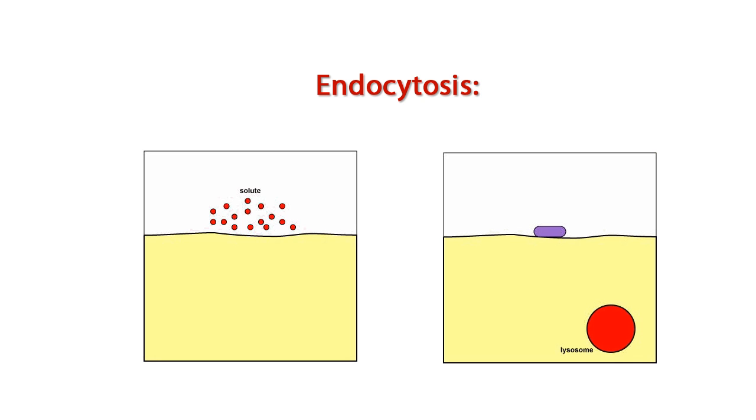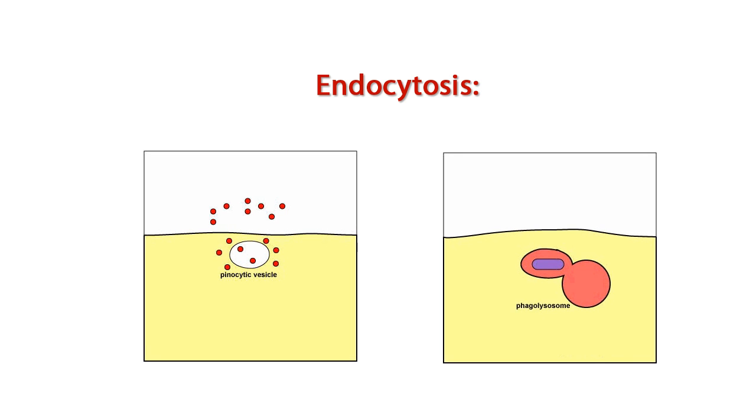In the case of endocytosis, molecules are being moved into the cell by the taking in of matter by a living cell by invagination of its membrane to form a vacuole around this material.